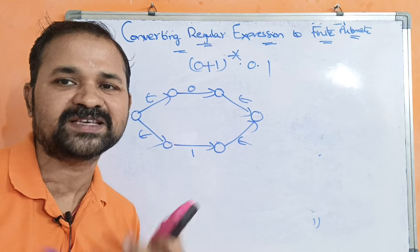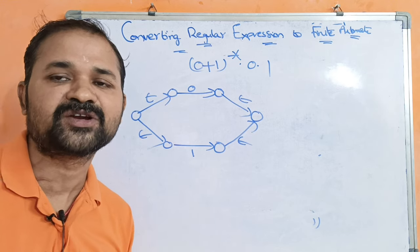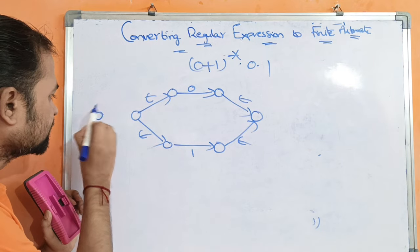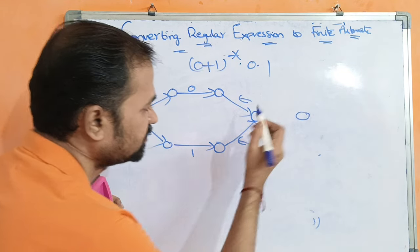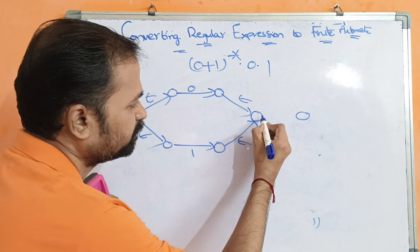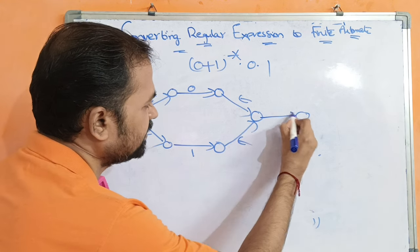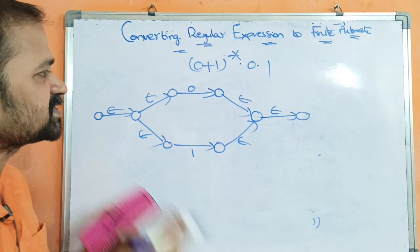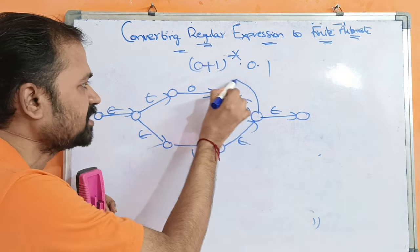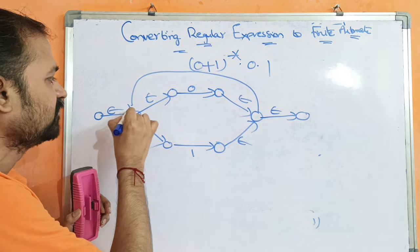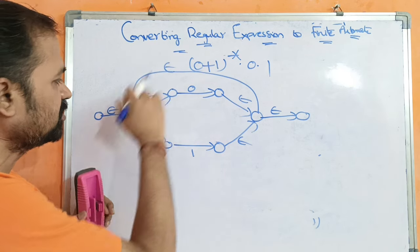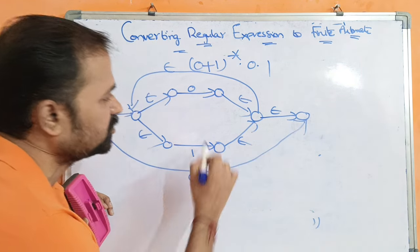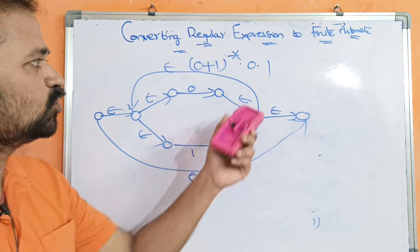Next we have to apply (0 plus 1) whole star, which is similar to a star. In order to apply the star, we require two more states. We apply epsilon symbols here — apply epsilon, apply epsilon. So for (0 plus 1) whole star, on applying epsilon we can go from this state to this state, and on applying epsilon we can move from this state to this state. So (0 plus 1) whole star is complete.